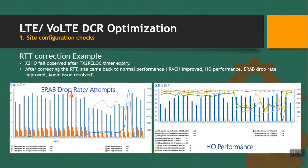You can see here ERAB drop rate degraded in the same period when RTT value was incorrect, and it also impacted handover KPI. RTT value is very important to improve DCR, handover performance, and ERAB drop. After correcting the RTT, the site came back to normal performance — RACH improved, handover performance improved, ERAB drop improved, and the RDO issue was also resolved.